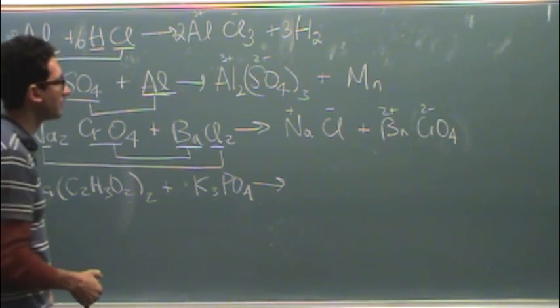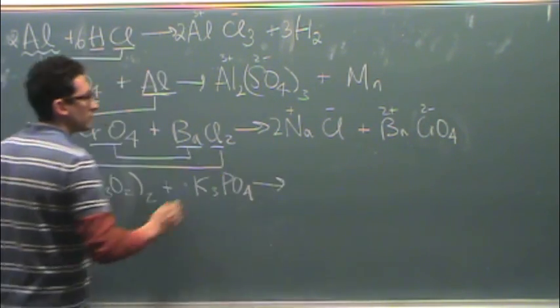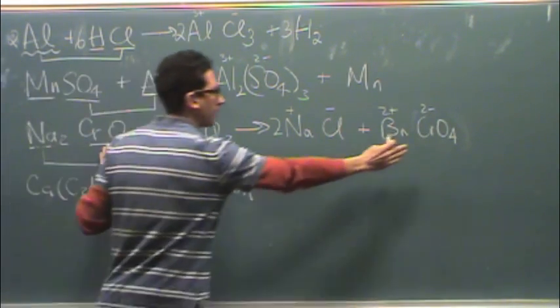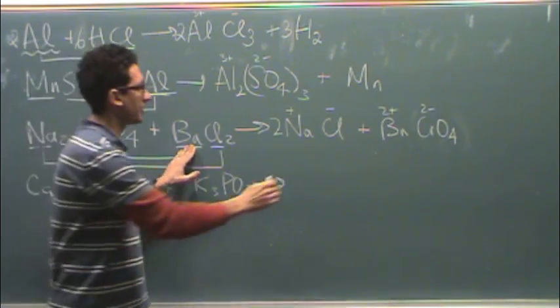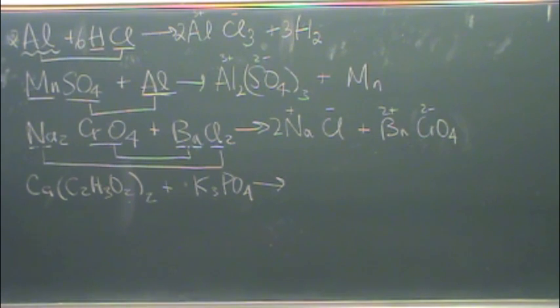We want to balance this. I look at the most complicated one. For me, that's the sodium chromate. I need two sodiums. So I put two sodium chlorides over there. I need one chromate. I got one. And then I've exhausted this molecule. Take a look at the barium. One of each. I'm good.